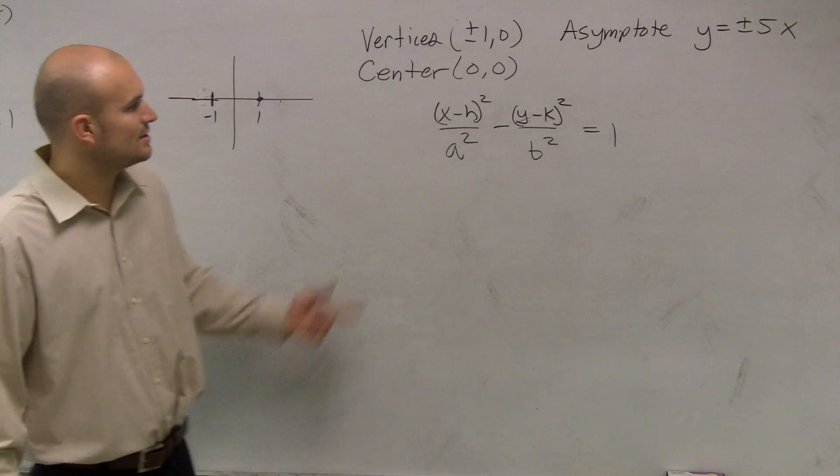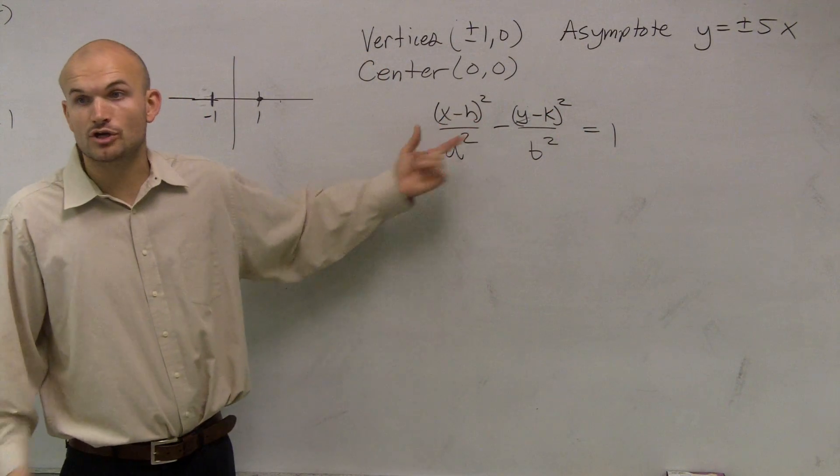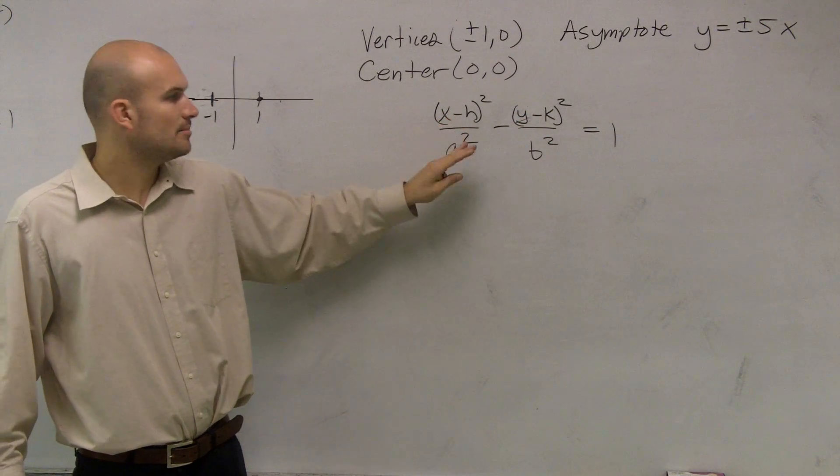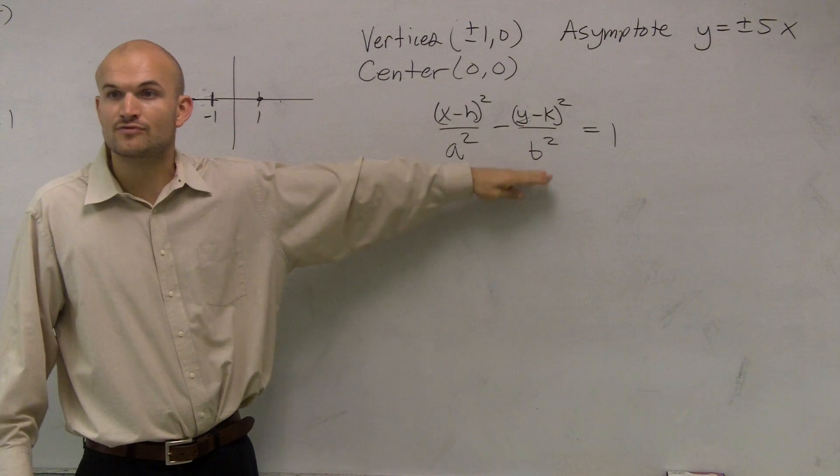So the main important thing I'm trying to state is, if this was vertical, if it was going to open up vertically, then the (y - k) would be under the a. Okay? But the a² and the b² do not change for hyperbola. That's one thing you guys need to understand, the difference between your hyperbola and your ellipses.